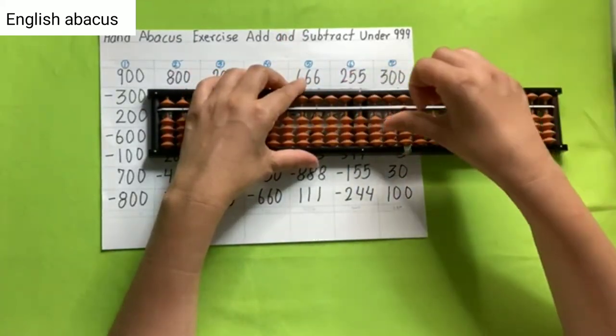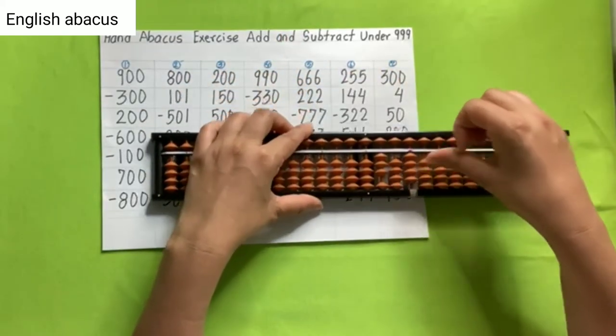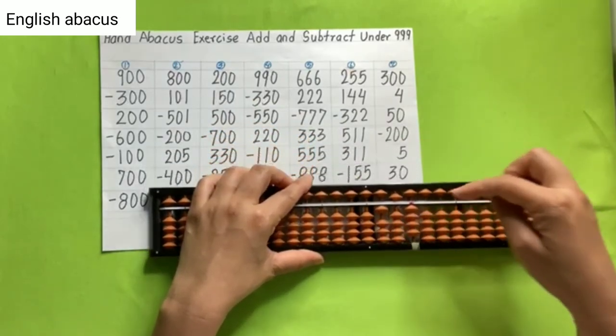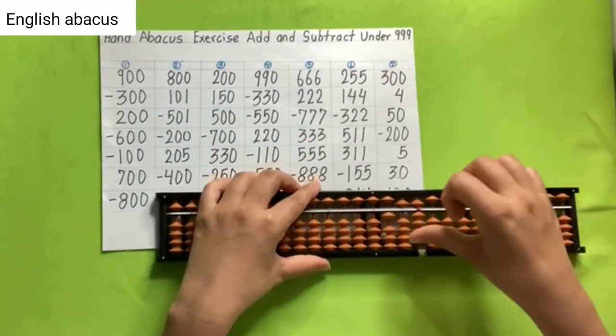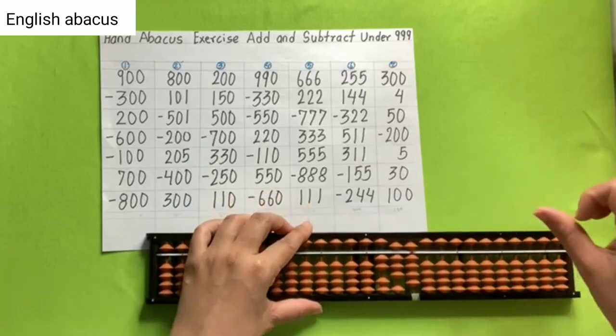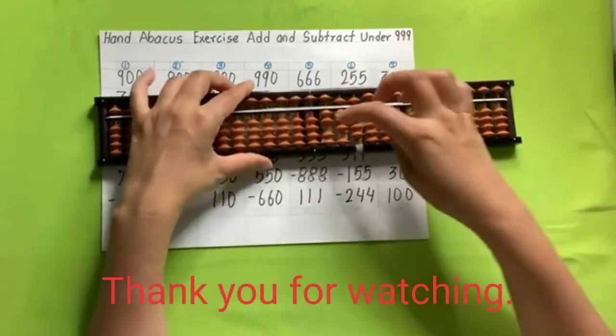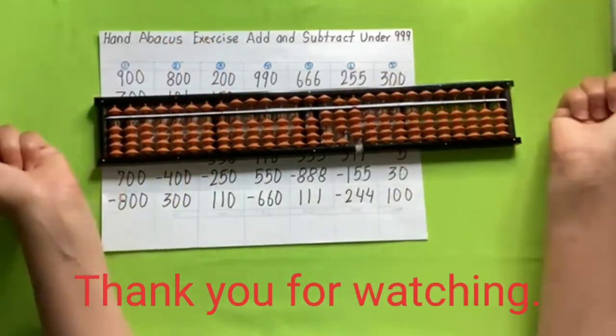And last number 300, add 4, add 50, reduce 200, add 5, add 30, add 100, and your answer is 289.